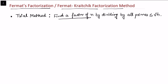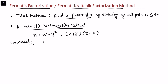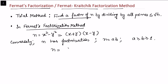In Fermat's factorization method, we notice that if we can write n as the difference of two squares — x² minus y² — then the right-hand side immediately gives us the factors (x + y) and (x − y). Conversely, if n has a factorization n = a × b, with a ≥ b ≥ 1, then we can write n as ((a+b)/2)² minus ((a−b)/2)².